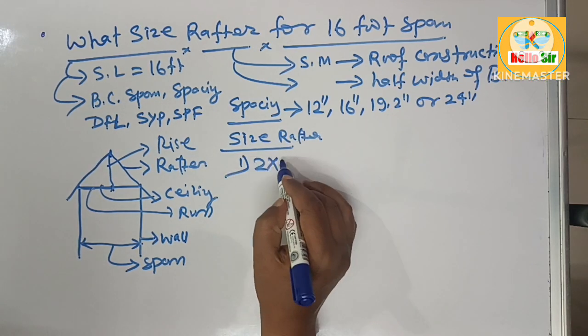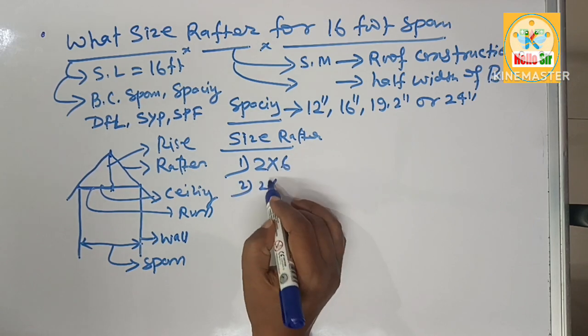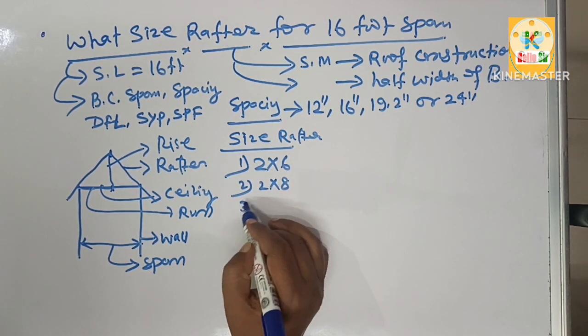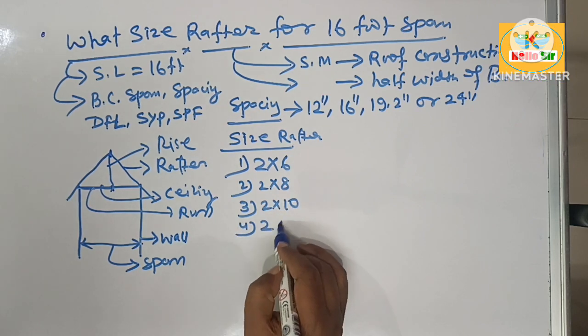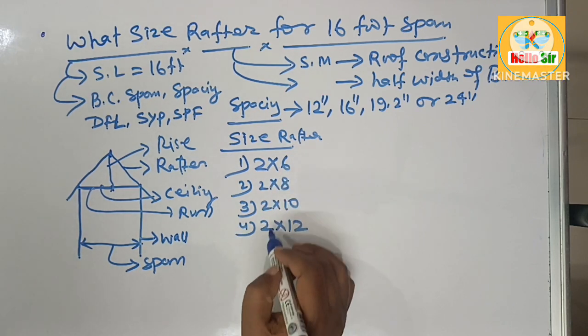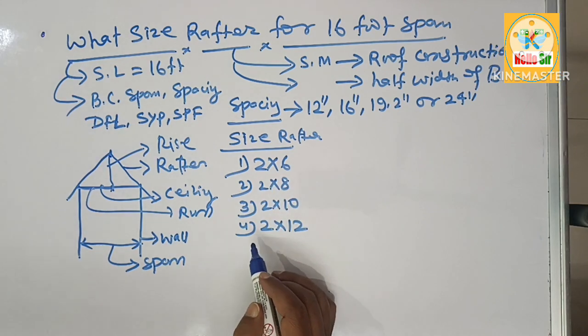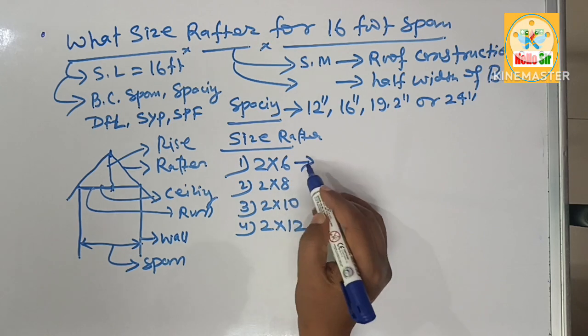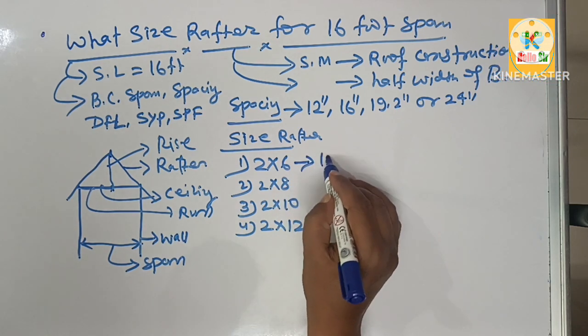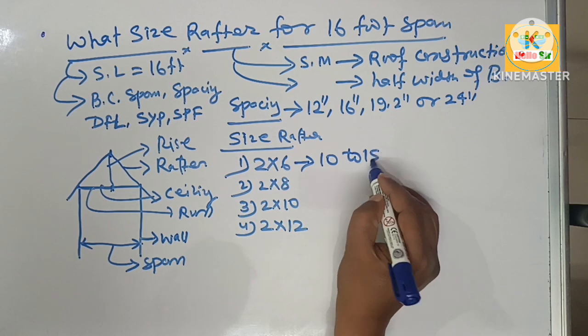The common size of rafter: 2 by 6 lumber, 2 by 8 lumber, 2 by 10 lumber, and 2 by 12 lumber. This size of lumber is used as rafter for different spans. In general, a 2 by 6 lumber may span from 10 to 15 feet.